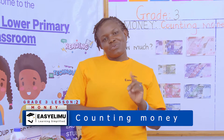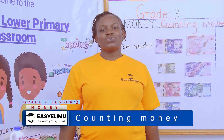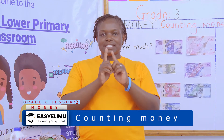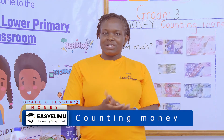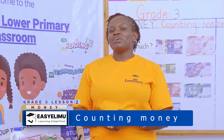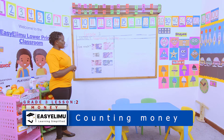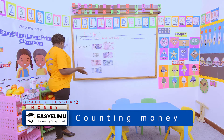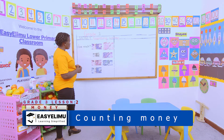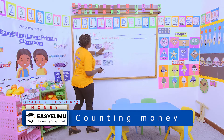We are counting 1 to 20, and this is how we count them. Welcome to Easy Limo Learning — simplified counting money. The other time we did the coins and the 50 shilling, the 100, but now we have increased. When I'm given 150, it is just how much — you tell me what is it, how much, and you tell me the answer.